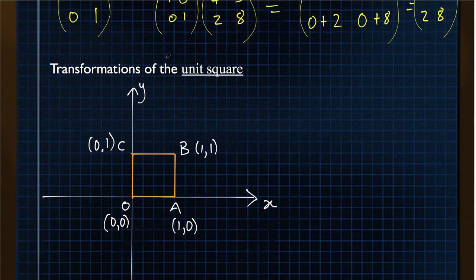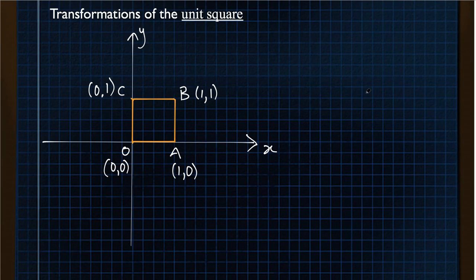Going on to transformation to the unit square. It's called a unit square because it's a square that is one unit in every direction. So the coordinates of the lower corner here are 1, 0. The furthest corner here is 1, 1 and 0, 1.